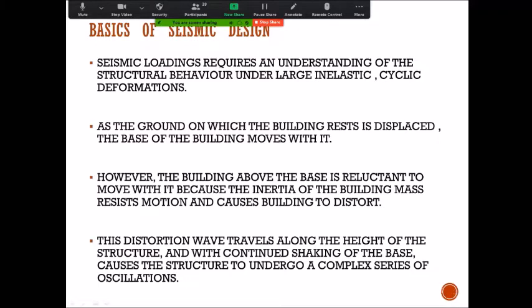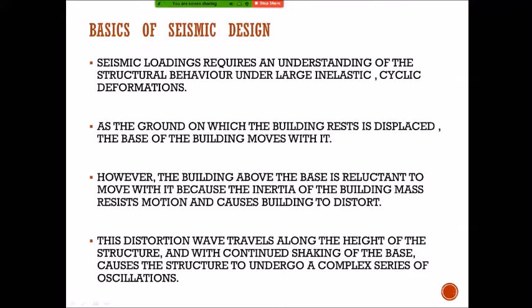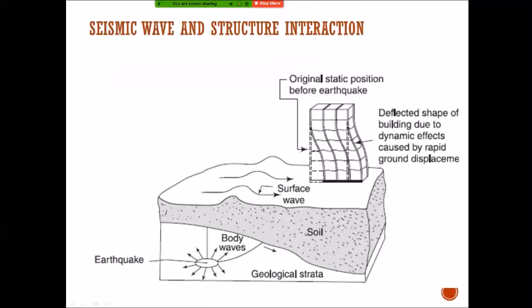As the ground moves, the building moves. Deep below, an earthquake takes place — that body wave moves and goes through the rock. Then wherever there is soil, it goes through the soil, comes to the surface, and then converts into a surface wave. There will be reflection, refraction, and many other things.